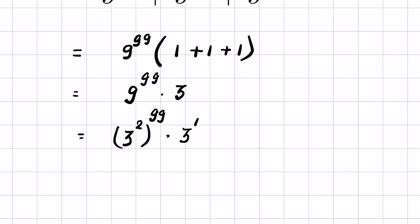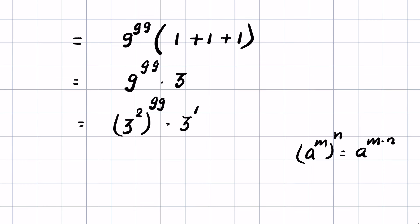Now when a raised to the power m, whole raised to the power n, this is equal to a raised to the power m times n. So this is 3 raised to the power 99 times 2, which is 3 raised to the power 198, times 3.